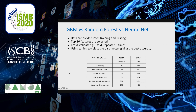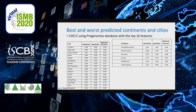We compared the machine learning models by simply dividing data into training and testing datasets. This example is for 16 variables selected for year 2017 using tuning to select the parameters giving the best accuracy. For this table, the random forest model, as expected, has better accuracy than the other two.